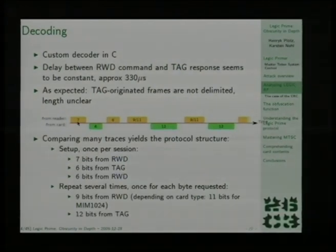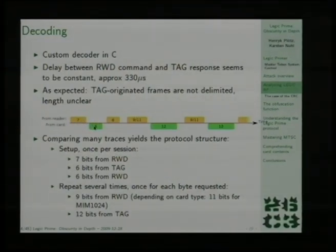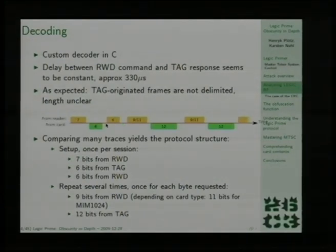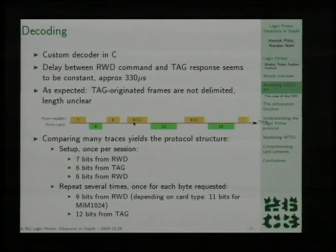The card frames have some length that we didn't know at first. By comparing multiple traces — and that's why it was important to always have the same command on the USB channel so that we always have comparable traces on the radio channel — we found that all the communication traces looked about the same. It starts with seven bits from the reader, six bits from the card, six bits from the reader: this is what we will later call the setup phase. Then starts some distinctly different communication — the main phase — where there's a reader command and a card answer, reader command, card answer, and so on.